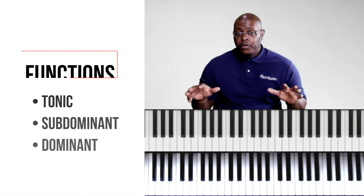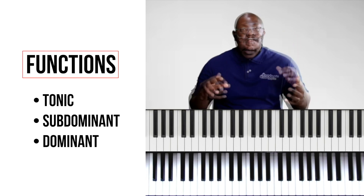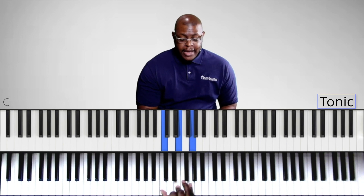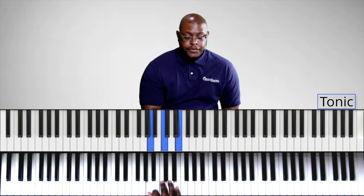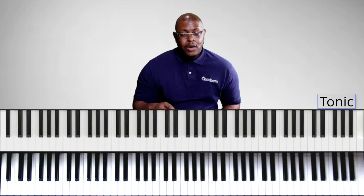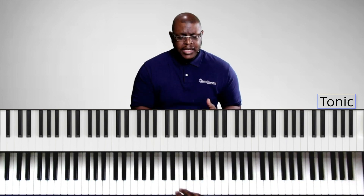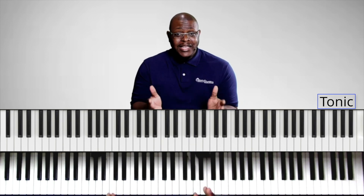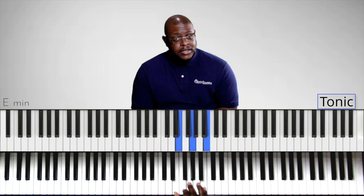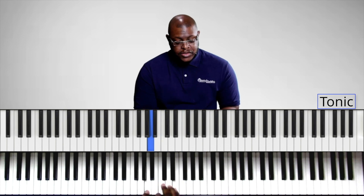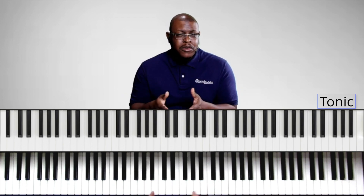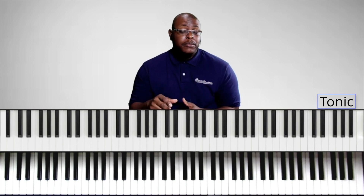There are three groups: tonic, subdominant, and dominant. The tonic group is made up of chords that are stable — they don't really want to move anywhere. That's C major, E minor, and A minor. In the key of C, the notes C, E, and G are stable tones. C major has all three of those notes, so it's really stable. E minor has two of them, and A minor has two of those notes as well. Because these chords contain two or three of these stable tones, they're home base — they do not want to move. That's what makes them part of the tonic group.